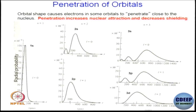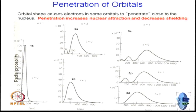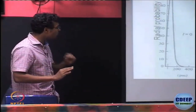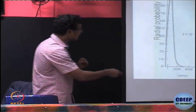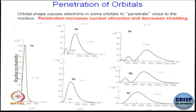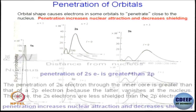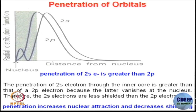Penetration actually means how much these orbitals are contributing towards, or how close they are to, the nucleus. As you can see, 1s is very close to the nucleus, and thereby the penetration of 1s is going to be maximum — it can neutralize the positive charge most efficiently. For 3d, the maximum probability of finding 3d electrons is really far from the nucleus; therefore, the neutralization ability of 3d electrons is the least out of all these orbitals.